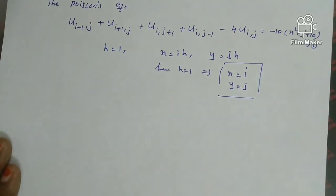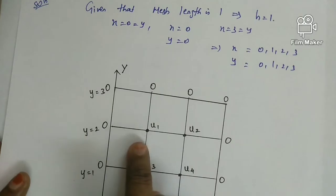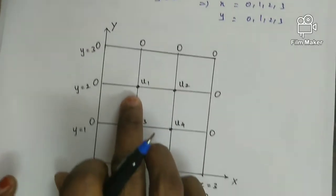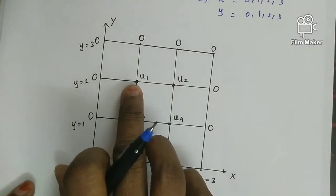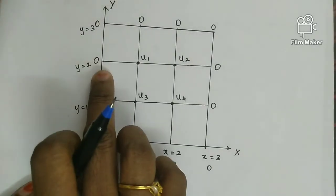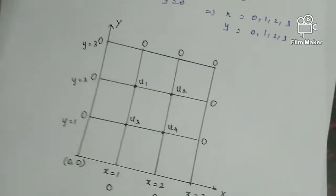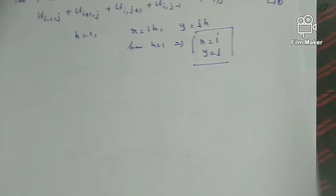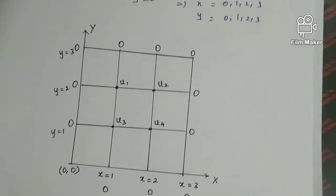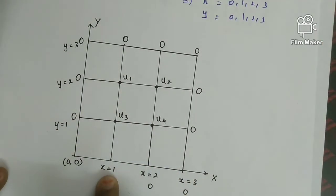We proceed to each grid point substituting i and j. The first mesh point is u1, where i equals 1 and j equals 2, meaning x equals 1 and y equals 2. Substituting into the standard five-point formula gives the equation at point u1.